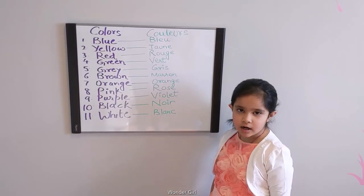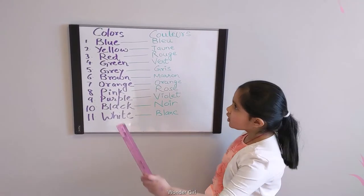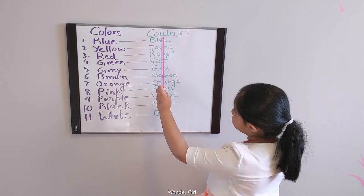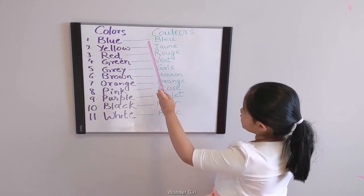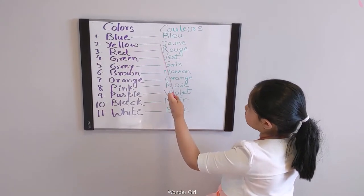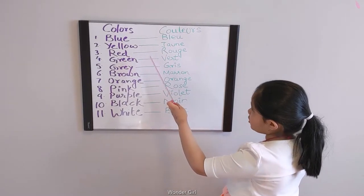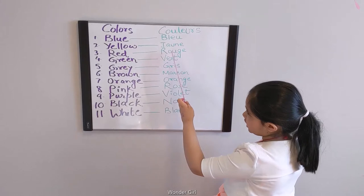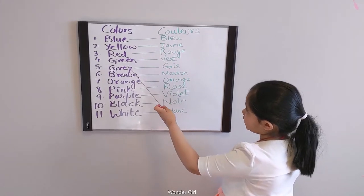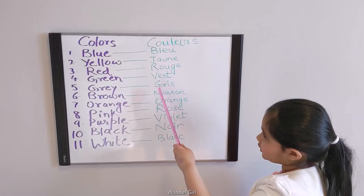I'm going to tell you the colors in French. Colors, couleurs. Blue is bleu, yellow is jaune, red, rouge, green is vert, grey is gris.